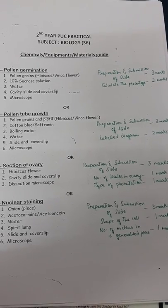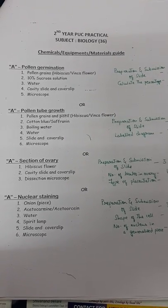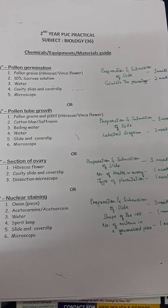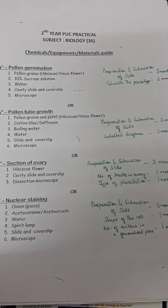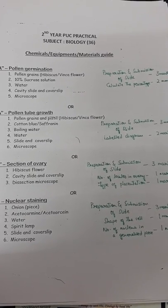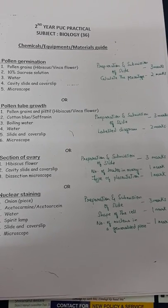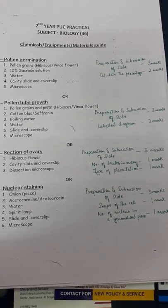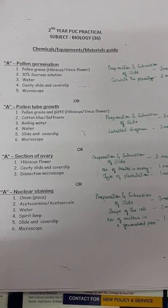Or you can choose pollen tube growth within the pistil. For this, take pollen grains and pistil of hibiscus or vinca rose, and using the staining process with saffranin or cotton blue, prepare a temporary slide to show the examiner. Again, preparation and submission of the slide gets three marks, and the labeled diagram gets two marks.